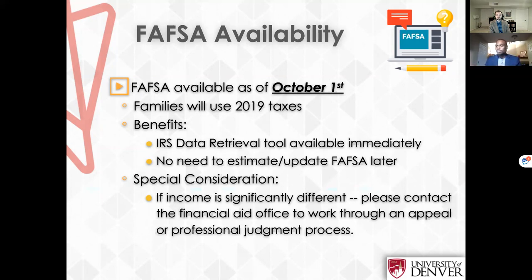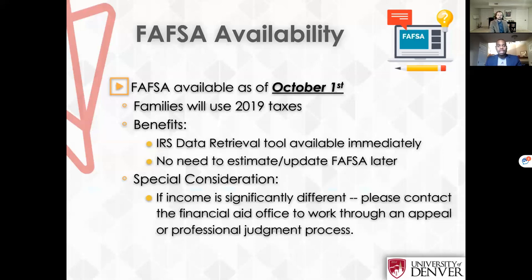A couple of benefits the FAFSA offers: you can use the IRS data retrieval tool, which allows you to port your tax information directly from the IRS if you've already filed your 2019 taxes, so there's no need to estimate. Regarding special considerations — many families find their 2019 income is very different from 2020 or 2021, especially due to the pandemic. The Department of Education allows financial aid offices to make adjustments for this. If you get your financial aid offer and you have concerns about the 2019 tax information used, reach out to the financial aid office. You cannot make those adjustments on your own — don't put in current information; the financial aid office has to do that.